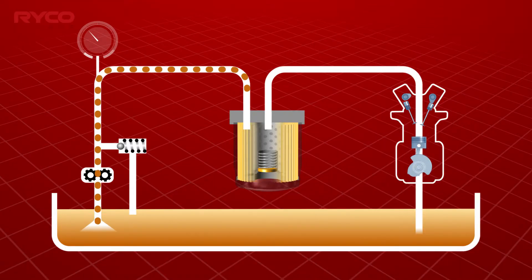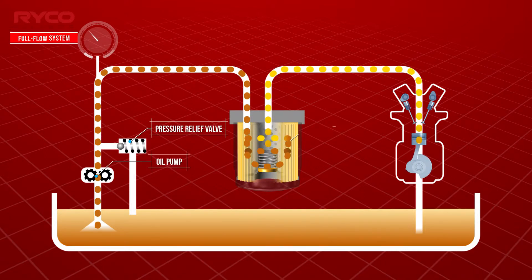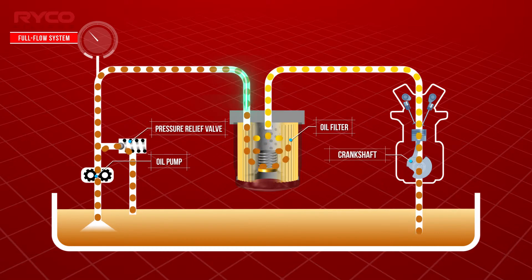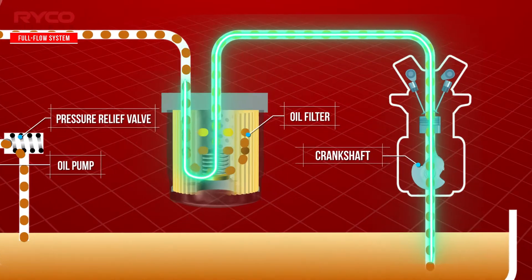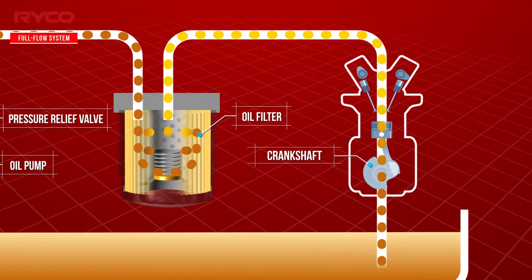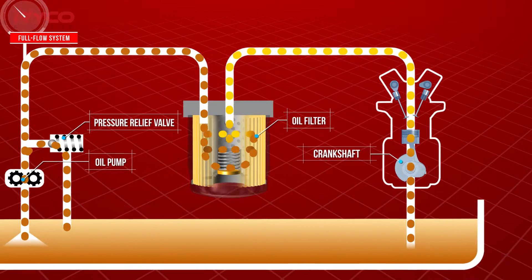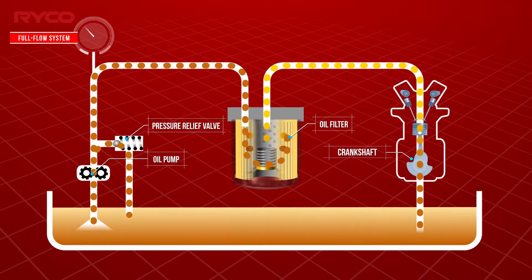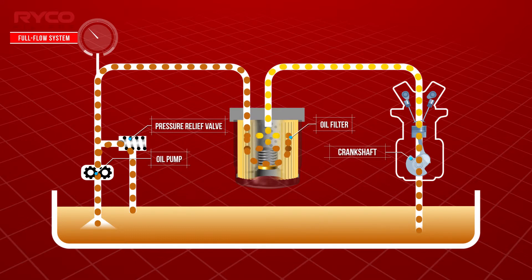Most passenger vehicles use the full flow oil filtration system, whereby 100% of engine oil must pass through the filter before travelling to and beyond the crankshaft bearings. At the end of its journey, the oil is returned to the sump ready to begin the cycle again. We can also refer to a full flow system as a multi-pass design.